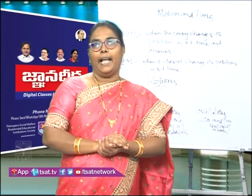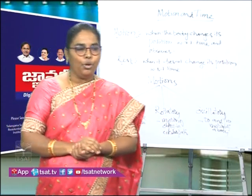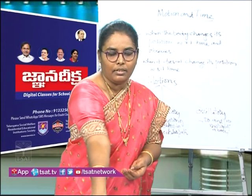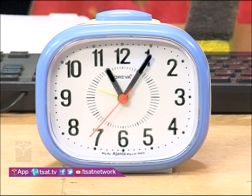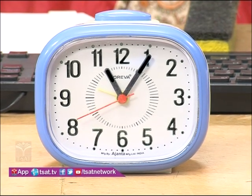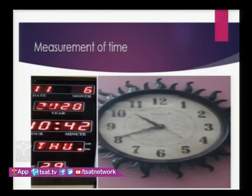Now next, how do you measure time? You know we use clocks to measure time. There is an analog clock and a digital clock. Using these we can measure the time. The basic unit of time is second. In olden days, when clocks were not invented, people used to measure time using sand clocks, water clocks, and a sundial.